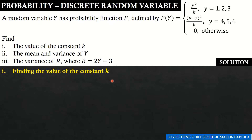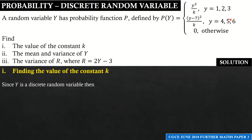We begin with part one — finding the value of the constant k. We are told our random variable has a given probability function, and clearly it is a discrete random variable because the values of Y occur at specific points: Y = 1, 2, 3, 4, 5, 6. If it were continuous we would deal with intervals, but since Y takes discrete values, Y is a discrete random variable.